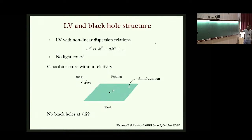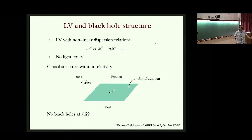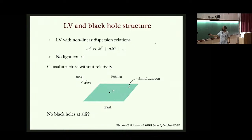If you had a theory with a preferred foliation, the causal structure would look fundamentally different: there are surfaces of simultaneity — which you don't have in GR — and everything to the future is future, everything to the past is past. The causal structure is super simple with no light cones, and it doesn't seem like a black hole could fit into that picture. But let's look at some theories. This is the action of Einstein-aether theory: the standard Einstein-Hilbert term plus a vector field u^a, which is constrained to be time-like (in plus-minus-minus-minus signature).